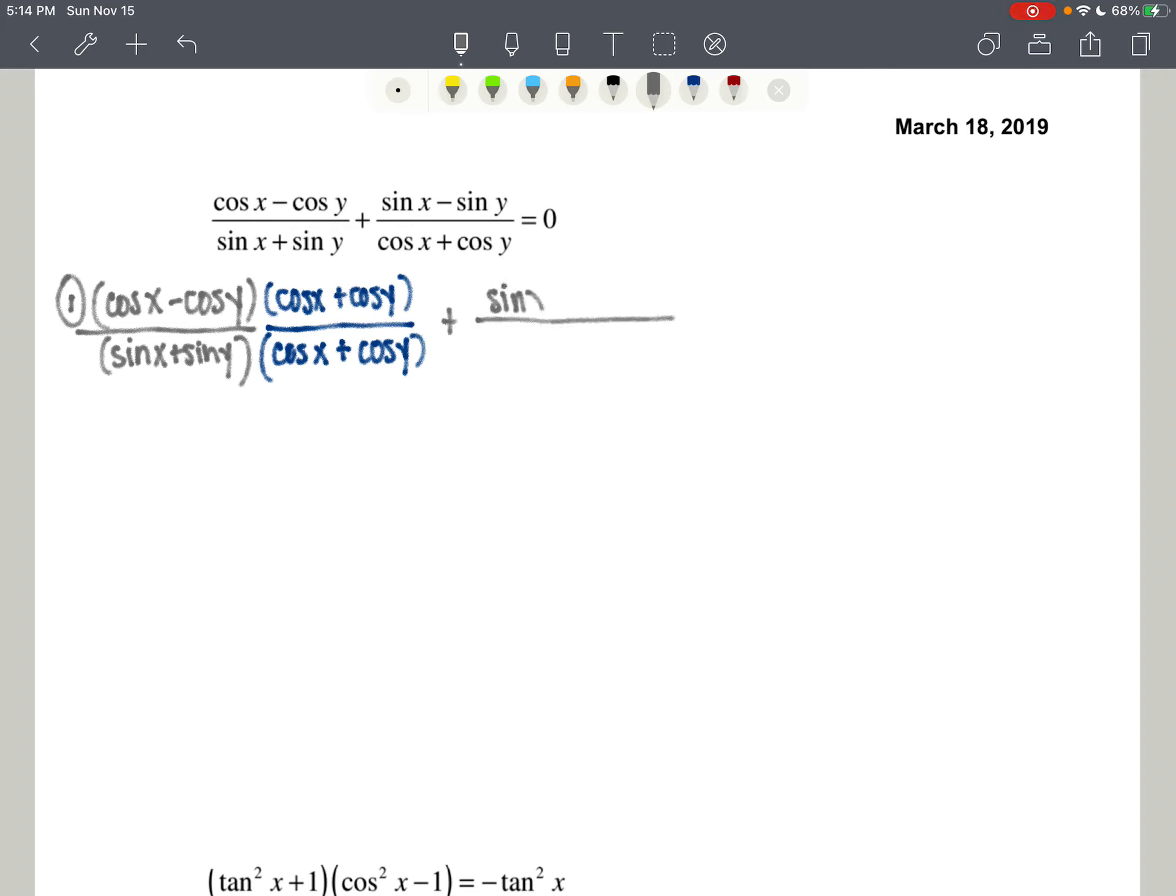Well, the second fraction has that cosine of x plus cosine of y. It needs sine of x plus sine of y, like the first fraction has in its denominator. And all of this is going to eventually equal zero, is what we hope. So we're going to rewrite this all over one denominator. Sine of x plus sine of y times cosine of x plus cosine of y.